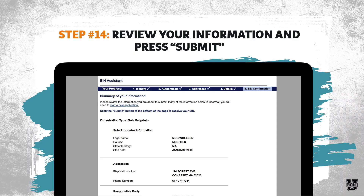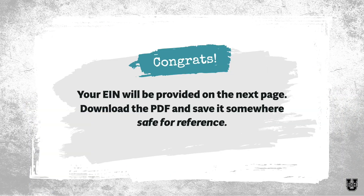Step number fourteen — the last step — is to review all of your information, scroll down, and press submit. Congratulations, that is it! Your EIN, if approved, will be provided on the next page. It should be approved unless there's some issue — I honestly don't think I've ever seen an issue come up. Go ahead and download the PDF with your EIN and save it somewhere safe for reference. If there is an issue and you don't get approved, it'll give you instructions on what to do next, which typically requires mailing in your application or calling to apply.